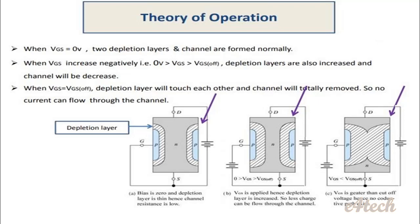As VGS increases negatively, the depletion layer increases and the channel width decreases. As the channel thickness decreases, the current flow through the channel reduces. When VGS equals the pinch-off value, the depletion layers touch each other and the channel is totally removed.